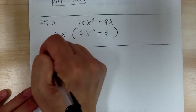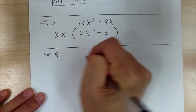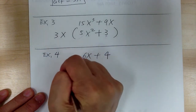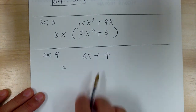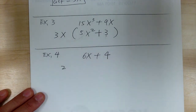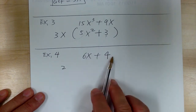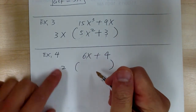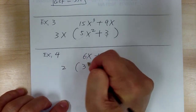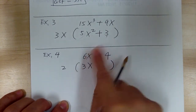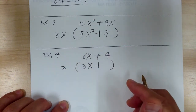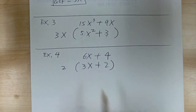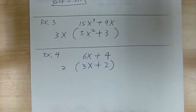Example 4: you've got 6x plus 4 and you want to factor. For 6 and 4, you can factor out the 2. Factoring means dividing. So 2 times 3x gives you 6x, and 2 times 2 gives you 4. The answer is 2(3x + 2). Factoring is the reverse of multiplication.